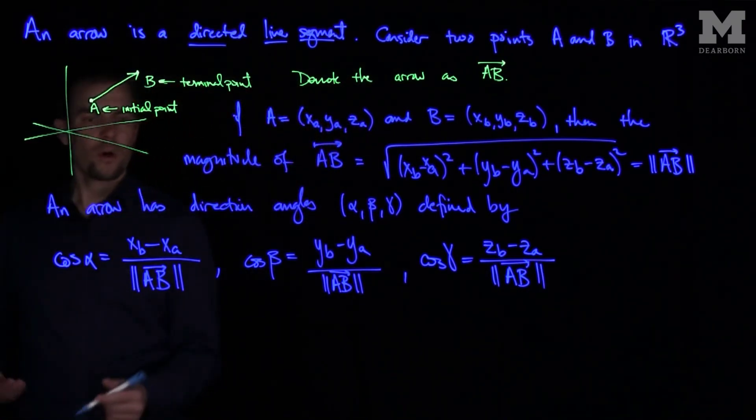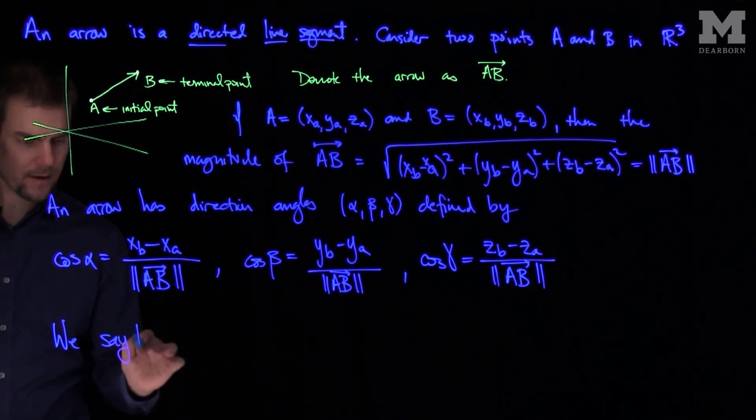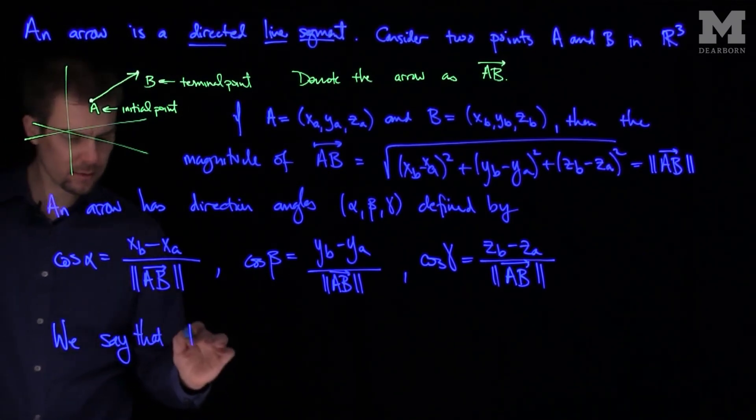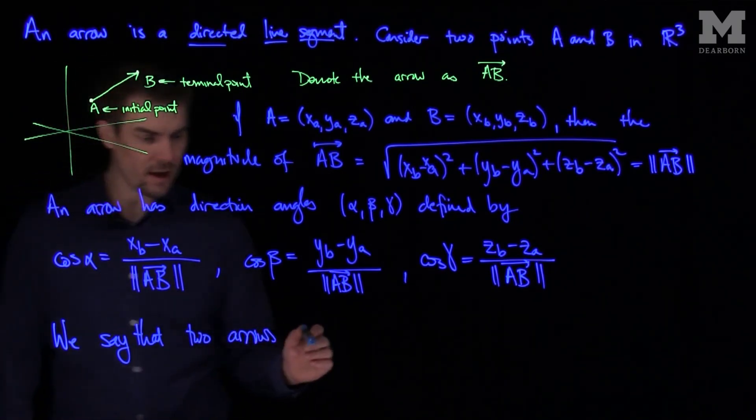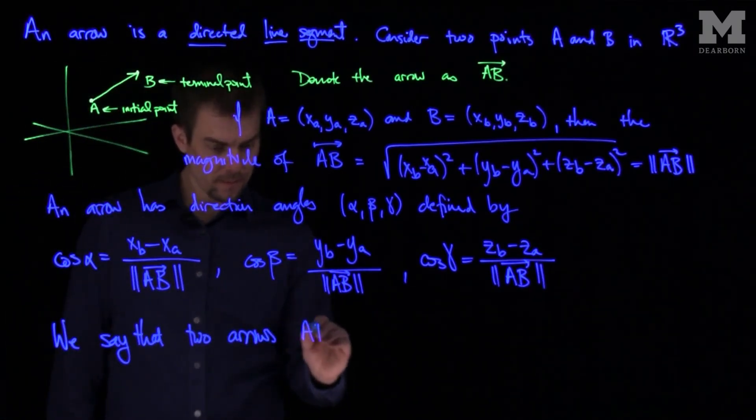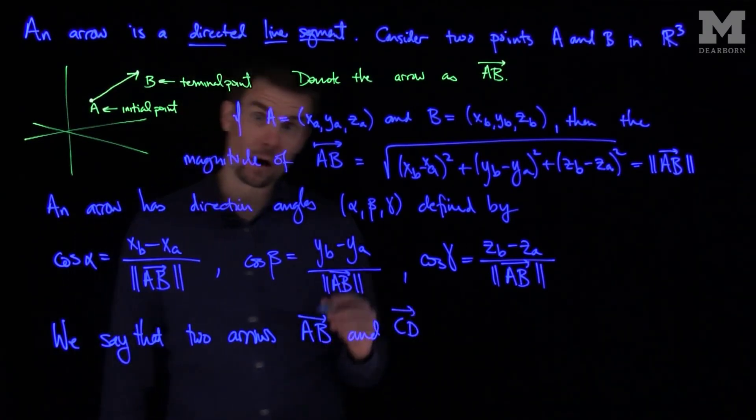And so we will say that two arrows AB and CD are equivalent